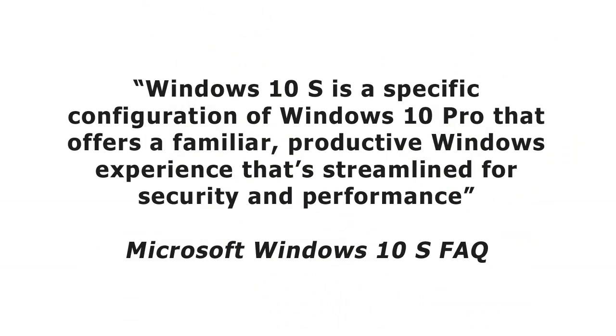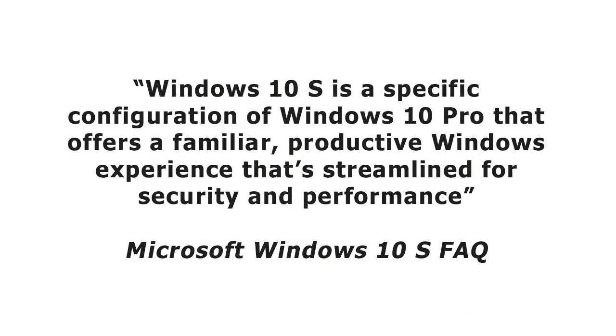So what is Windows 10 S? Well, according to Microsoft, it's a specific configuration of Windows 10 Pro that offers a familiar, productive Windows experience that's streamlined for security and performance. So you're thinking straight away, this is a better version of Windows 10, better than Windows 10 Home or Windows 10 Pro — it's streamlined for security and performance, that has to be good, doesn't it?